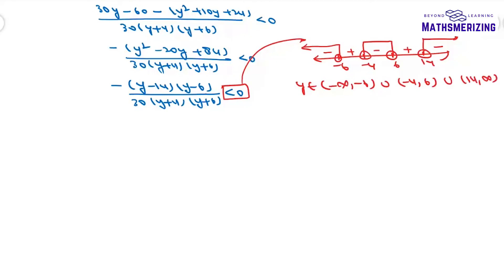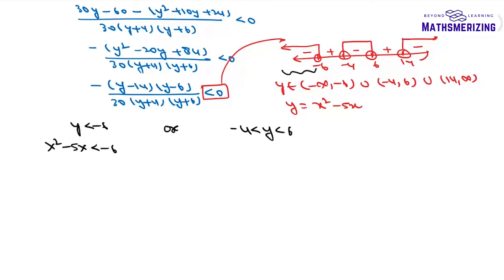The condition I get is y belongs to (-∞, -6) ∪ (-4, 6) ∪ (14, ∞). I need to find the values of x, not y. Since y = x² - 5x, I write three cases: Case 1 when y < -6, which is x² - 5x < -6; or y lies between -4 and 6, that is -4 < x² - 5x < 6; or y > 14, that is x² - 5x > 14.